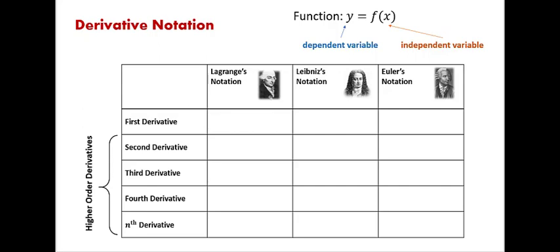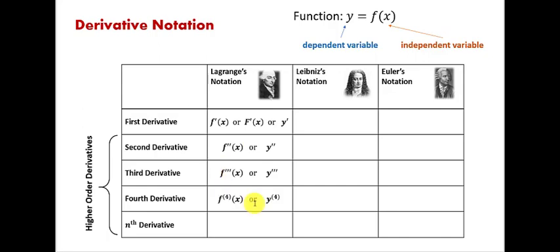First is Lagrange's notation. Lagrange's notation is the one where we use prime to represent the derivative. For the second and third derivatives we use double prime and triple prime respectively. Starting with the fourth derivative we usually no longer use prime, but rather just use the number that represents the order of the derivative, placed inside parentheses so it's not confused with a power. And this would be the notation for the nth derivative.